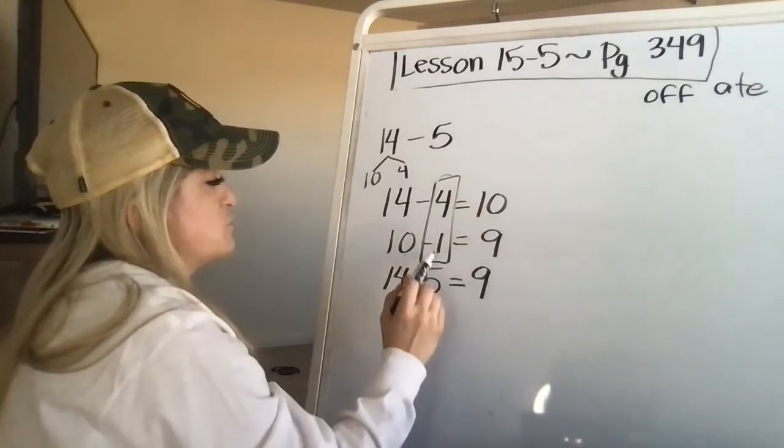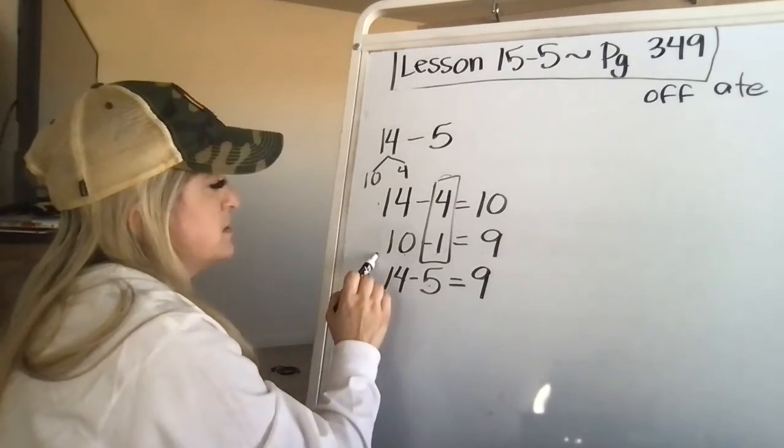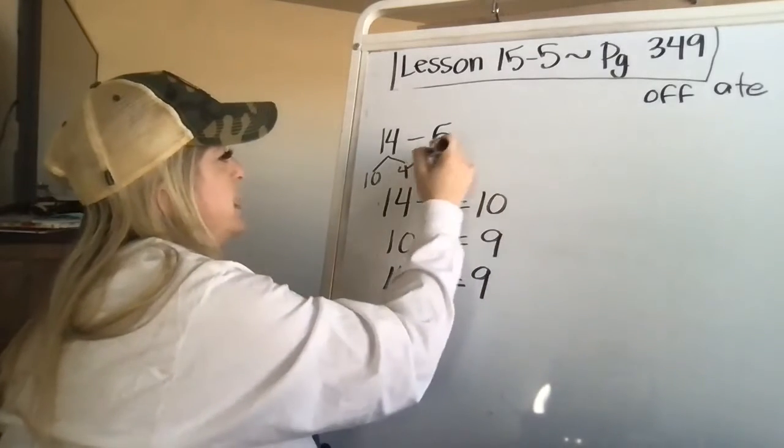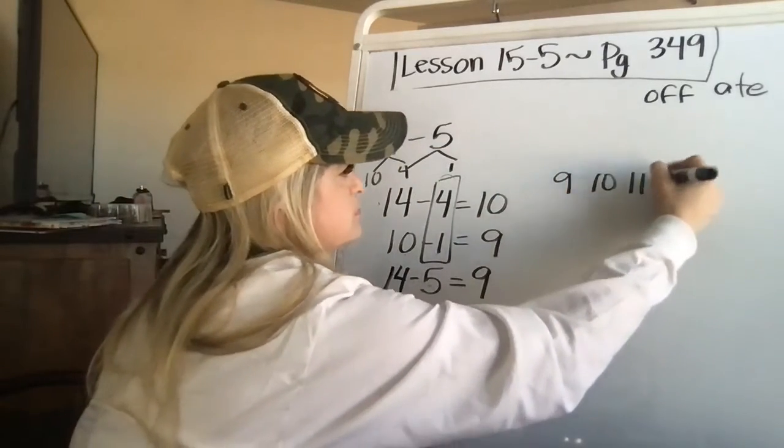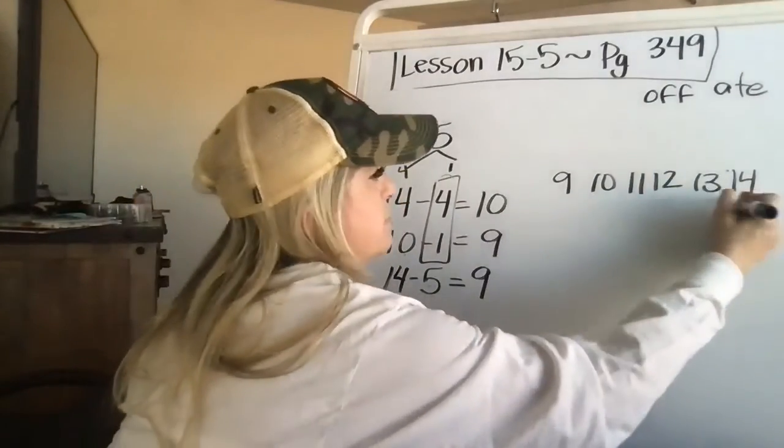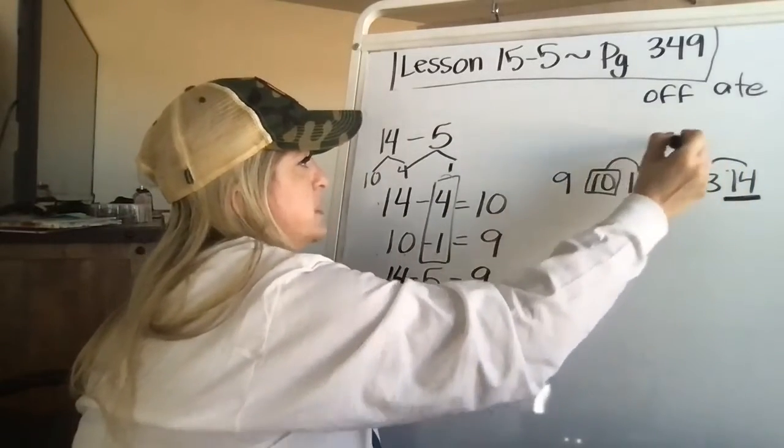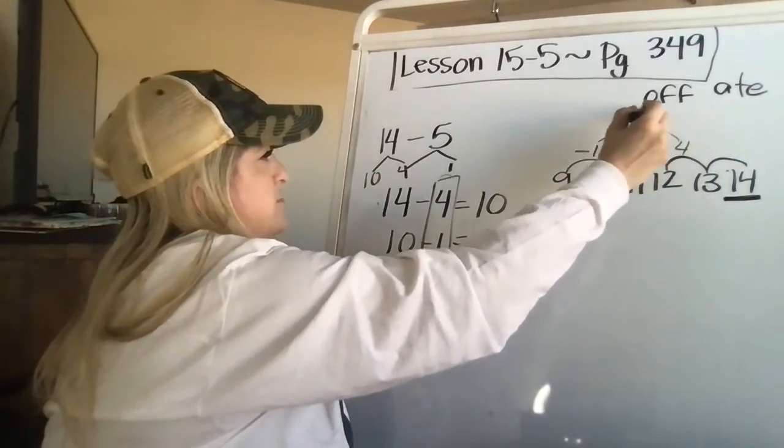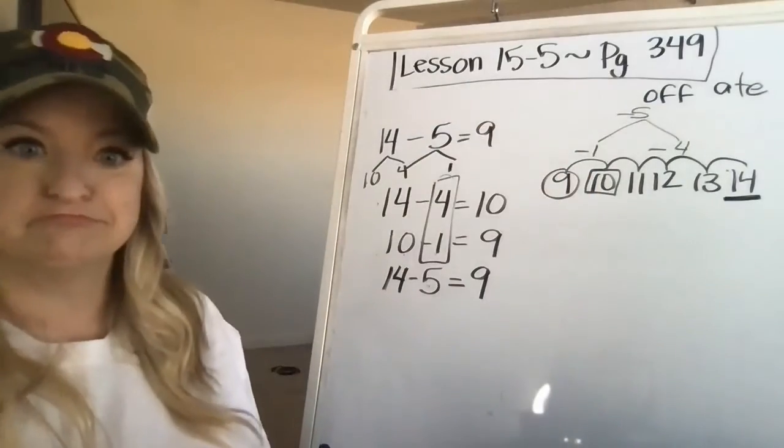So then I take what I got there and I subtract one from 10 and I get nine. Then I add up how many I subtracted four plus one is five. I really subtracted five. I did it in two steps. And so the total that I started with was 14 minus five. And the answer is nine. But if you want to see, I will do this on a number line as well. Okay.